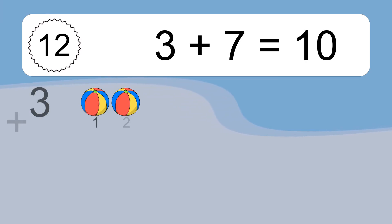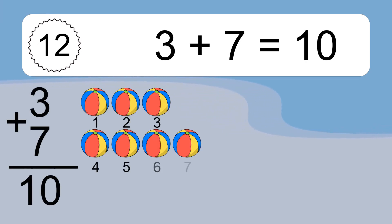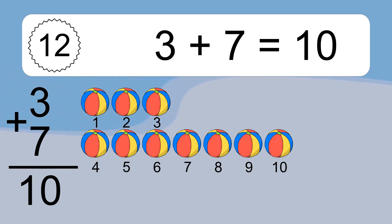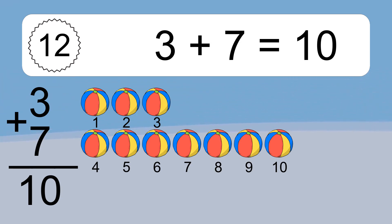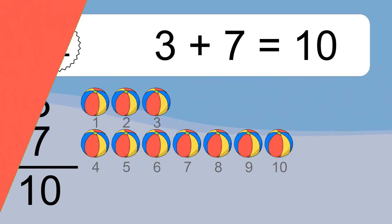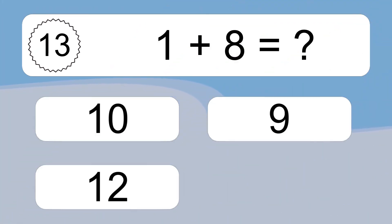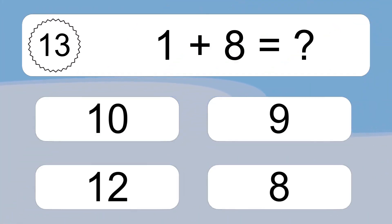3 plus 7 equals what? 5 plus 4 equals 10. Let's count it. 1, 2, 3, 4, 5, 6, 7, 8, 9, 10.